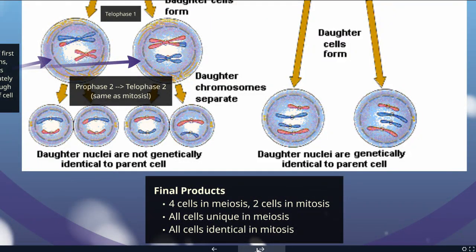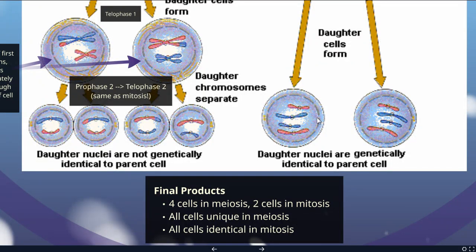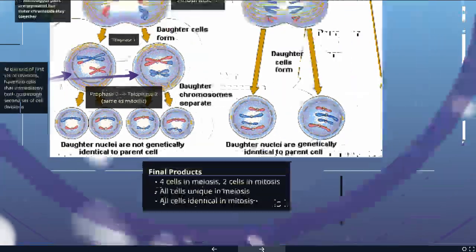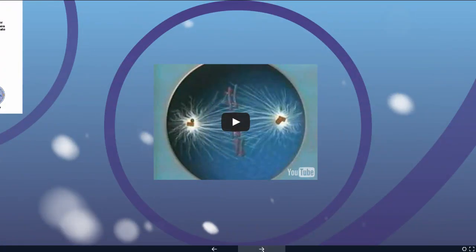Comparing the final products between mitosis and meiosis: in meiosis we end up with four cells, and in mitosis we end up with two. In meiosis, all four are genetically unique, whereas in mitosis each cell is genetically identical. This next video is a nice summary of the process of meiosis and will give you a visual of how this process works.